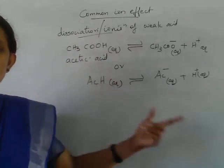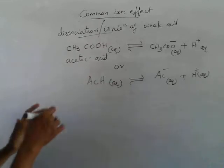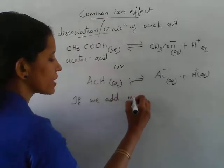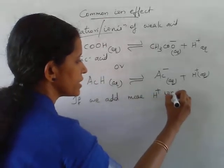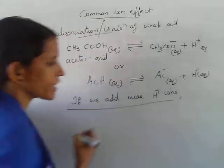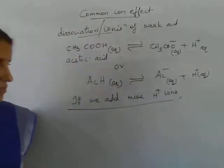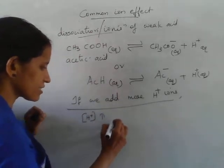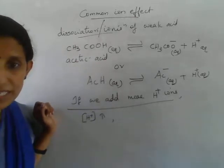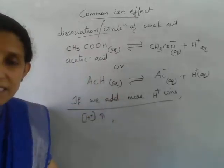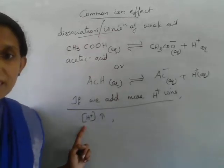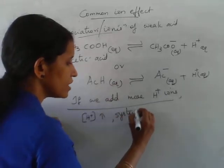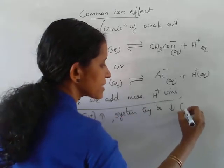Consider the dissociation equilibrium of acetic acid. Now, into this equilibrium, if we add more H plus ion, what happens? The H plus ion concentration will increase and the equilibrium will be disturbed. By Le Chatelier's principle, the system will try to decrease the H plus concentration.